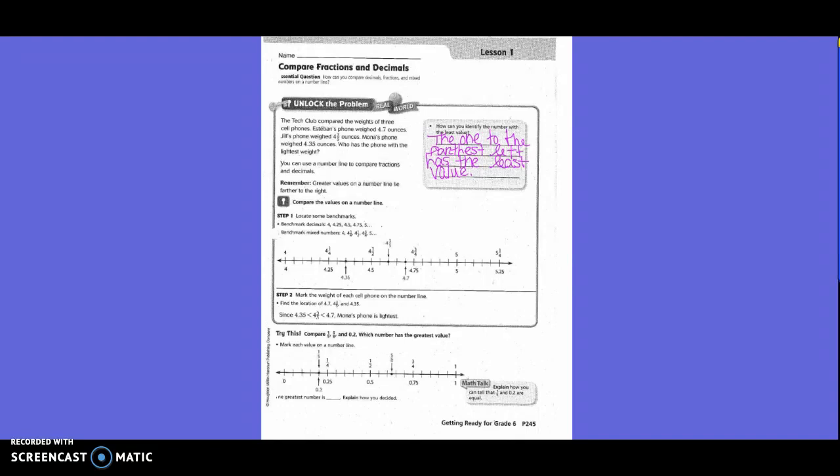Mark the weight of each cell phone on the number line. Find the location. Since 4 and 35 hundredths is less than 4 and 3 fifths, and 4 and 3 fifths is less than 4 and 7 tenths, Mona's phone is the lightest.